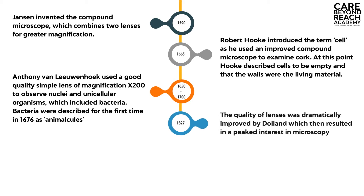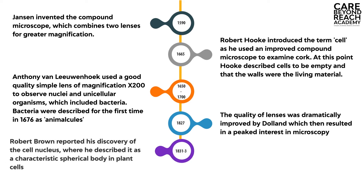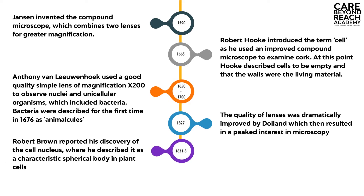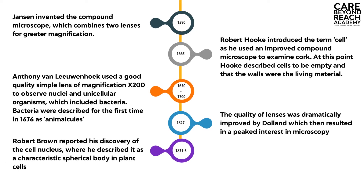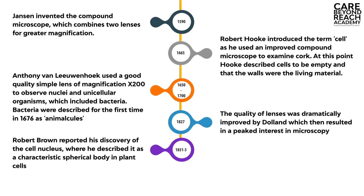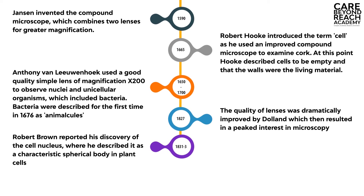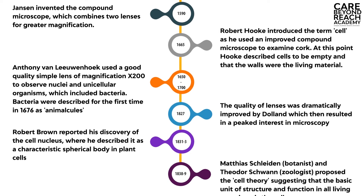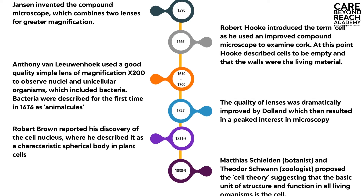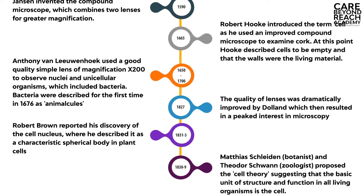In 1827, the quality of lenses was dramatically improved by Dolan, which resulted in a peaked interest in microscopy. In 1831 to 1833, Robert Brown reported his discovery of the cell nucleus, where he described it as a characteristic spherical body in plant cells.